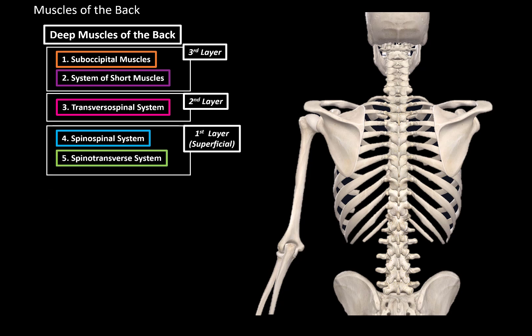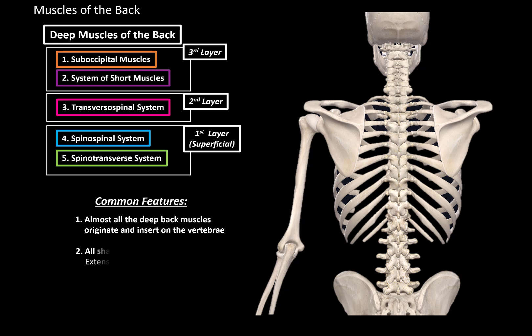Even though the deep back muscles are divided into systems of muscles, they all share the same features. Almost all the deep back muscles originate and insert at the vertebra, and all share the same function, which is extension of the vertebral column. So they provide stability of the vertebral column and help maintain our posture and the natural curve of the spine.